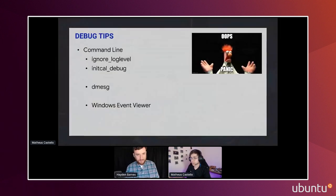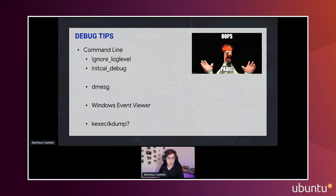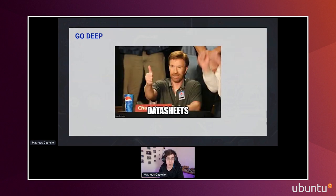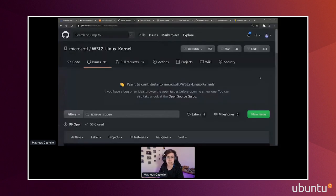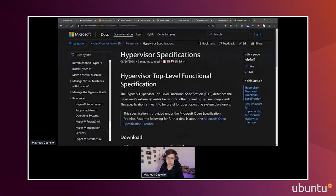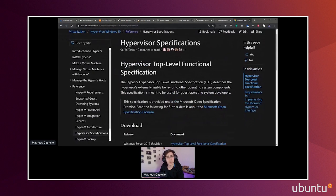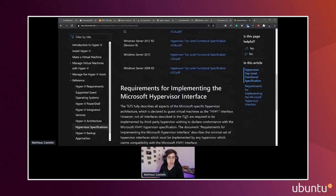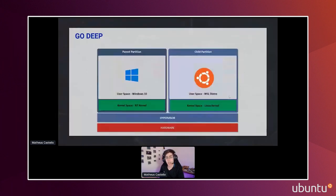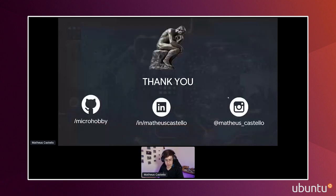Another way to get crash logs is via kexec or kdump — though to be honest, I've never tried those on WSL, so that's a subject for another talk. If you want to go deep on Hyper-V and WSL and understand how things work behind the scenes, I recommend reading the hypervisor specifications. The datasheet is the best friend of the kernel developer, and Microsoft provides a Hyper-V datasheet as a downloadable PDF showing how Hyper-V works — this will help you understand how the hypervisor operates and how Windows and Linux run inside it.